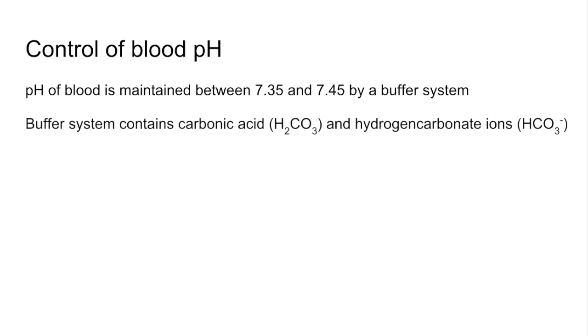We'll finish with the control of blood pH. Blood pH is maintained between those values by a buffer system containing carbonic acid and hydrogen carbonate ions. The equilibrium that's at work is this one here.